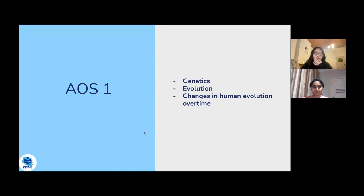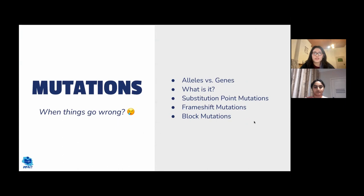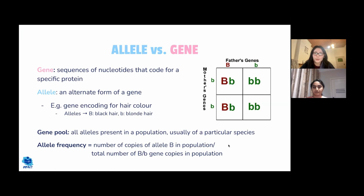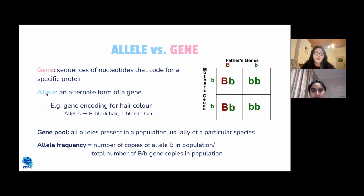We'll start with area of study one, beginning with mutations. First, let's revise alleles and genes. A gene is a sequence of DNA nucleotides that codes for a specific protein — it's the DNA sequence that is transcribed to form mRNA, which is then translated to form the protein. An allele is an alternate form of a gene; for example, different alleles of the hair colour gene could be an allele for black hair or blonde hair.